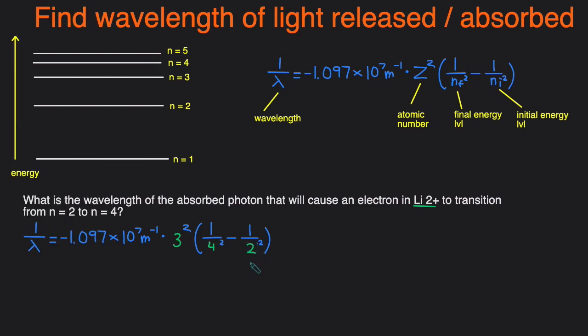Then we can plug this into the calculator and that gives us 1.85 times 10 to the 7 meters to negative 1, and then to actually get the wavelength we raise that to the negative 1